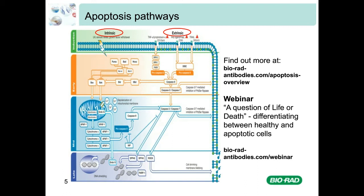Looking at the intrinsic pathway, this process starts with the activation of apoptosis proteins including BCL2 homologous antagonist or killer (BAK) and BCL2-associated X protein (BAX). These proteins break down the mitochondria — they form oligomers and insert themselves into the outer mitochondrial membrane, eventually causing holes and leading to a decrease in mitochondrial membrane potential. Once the outer mitochondrial membrane is permeabilised, this is considered the point of no return, and apoptosis cannot be reversed.